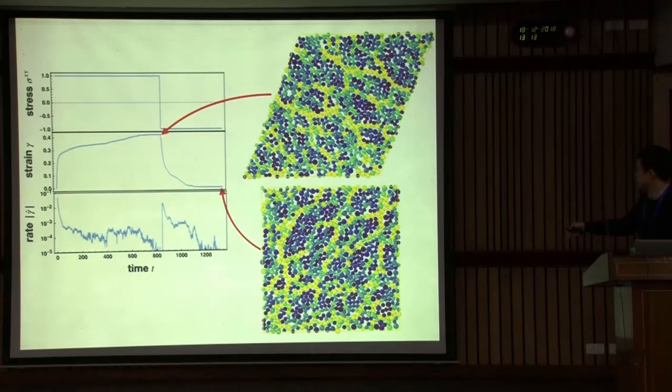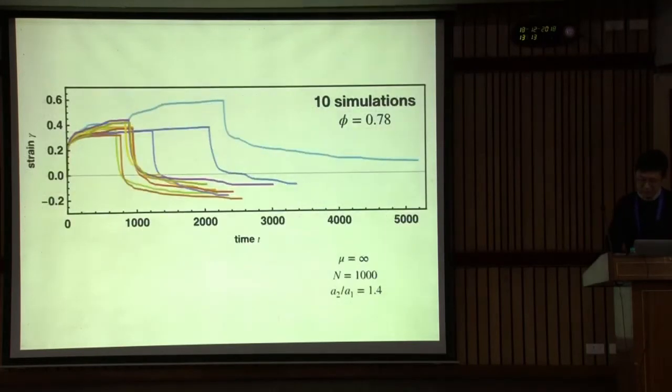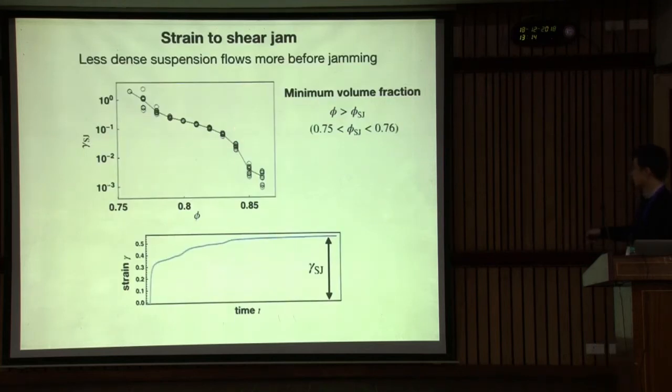But this is just one case. If I run 10 simulations, this is totally a very irreversible process. Jammed state and other jammed state is different state. We have a flowing state between. But you see some idea of how to characterize this shear jamming. Actually, to get shear jammed state, it flows at a certain time, certain strain. So this strain can characterize this jammed state.